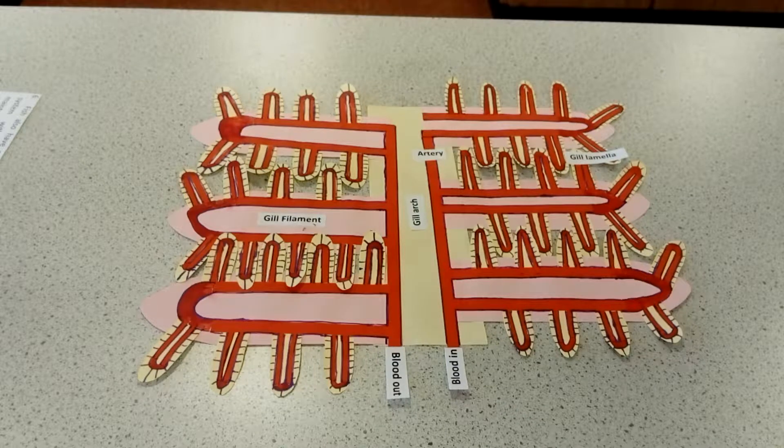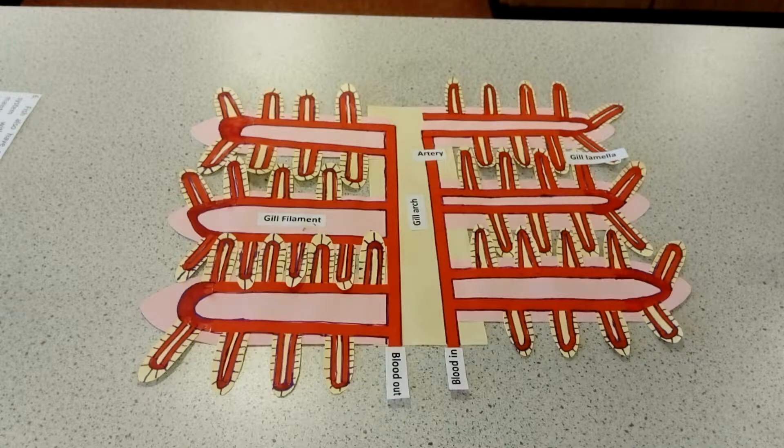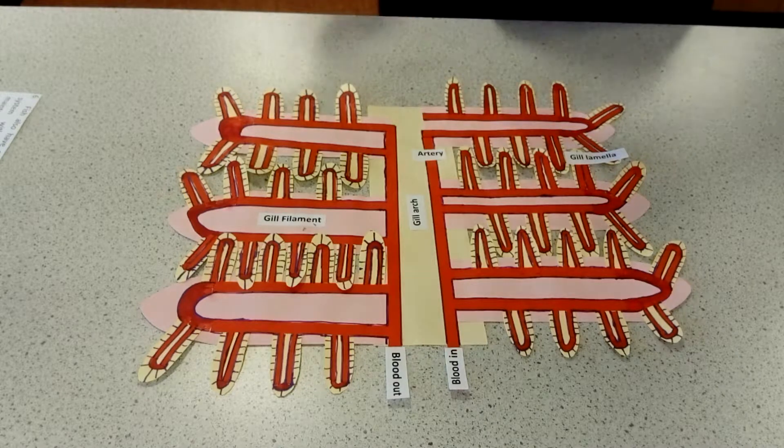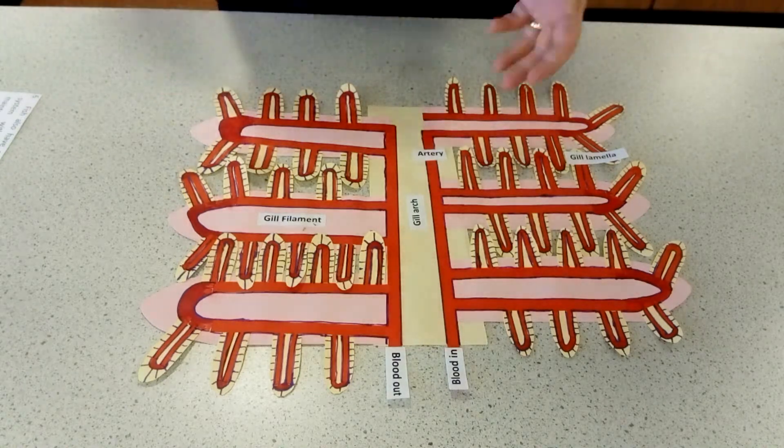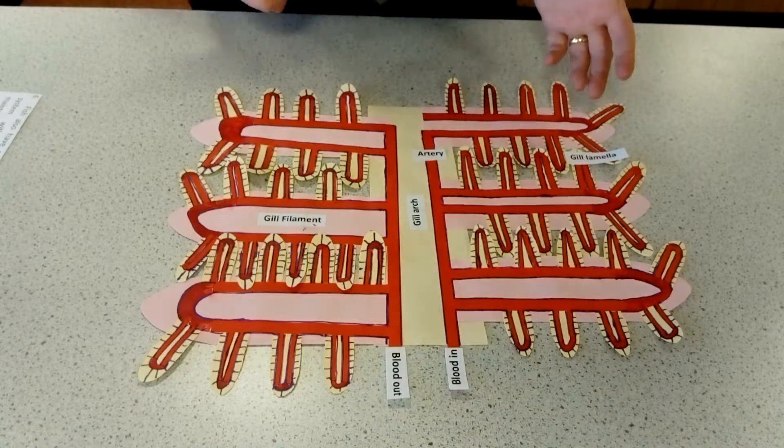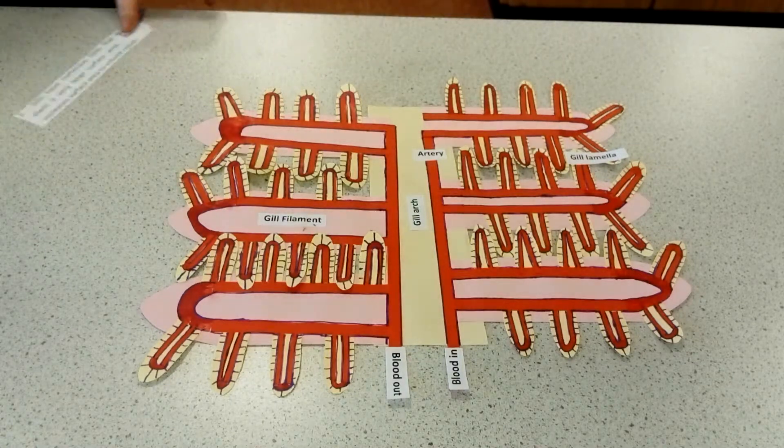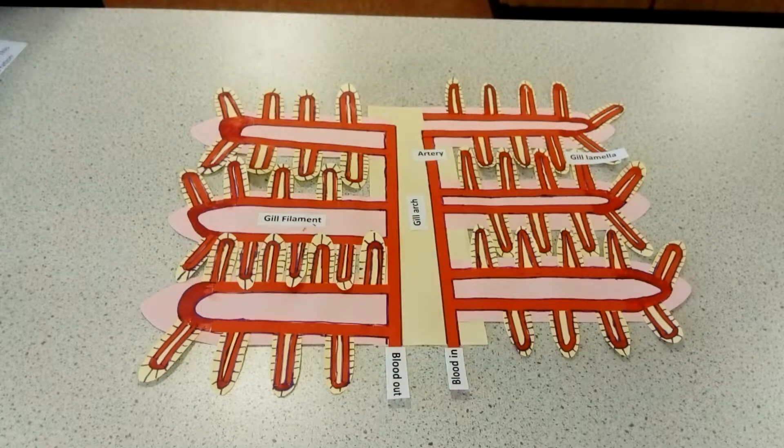The second thing, the second key thing that we need to consider when we're talking about gas exchange in fish is physically the structure of the gills and how the gills increase surface area to volume ratio. A few key things to think about then. So we'll have a run through of what happens.